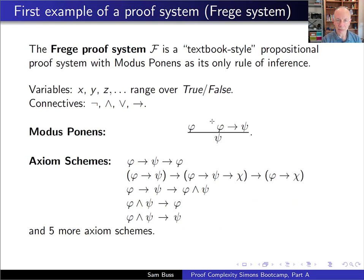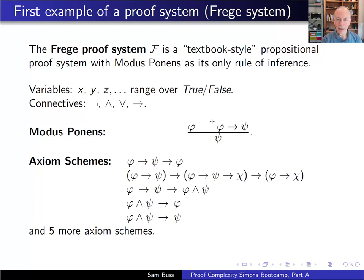The first proof system is Frege proof systems, denoted F—a textbook-style propositional proof system that proves formulas rather than refuting them. It uses modus ponens as its only rule of inference. Variables range over true-false values; connectives include not, and, or, and if-then. Modus ponens says: from phi, and phi implies psi, you can infer psi. There are many possible axiomatizations.